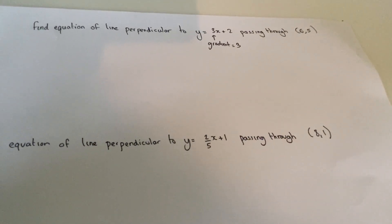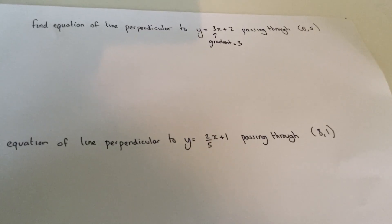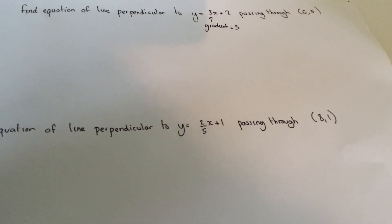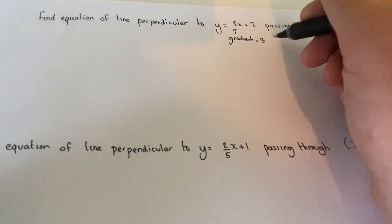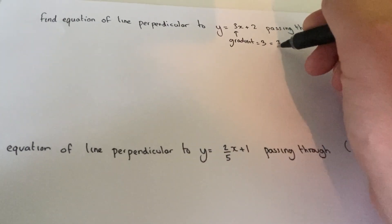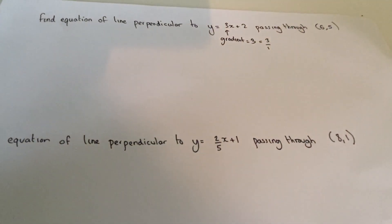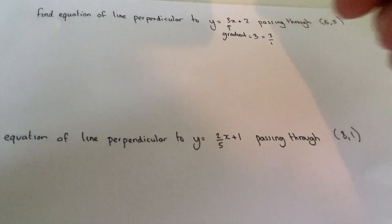Here is the key fact about gradients and perpendicular lines. The gradient of 3 means for every 1 across we go 3 up. So that's the same as 3 over 1. Now if a line is perpendicular...